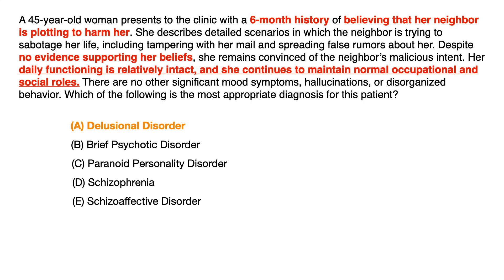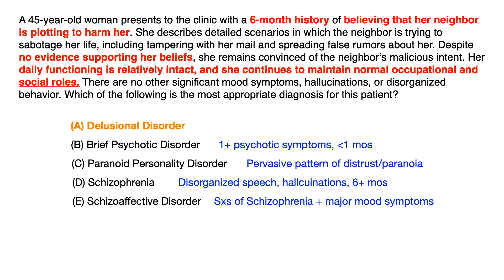Even if you didn't know the answer was delusional disorder, you could eliminate choices B through E. Choice B, brief psychotic disorder, refers to one or more psychotic symptoms occurring for less than one month. Since psychiatry questions always give you a timeline, and this is a six-month history, you can immediately eliminate brief psychotic disorder. Think of it as the symptoms of schizophrenia occurring for up to one month.